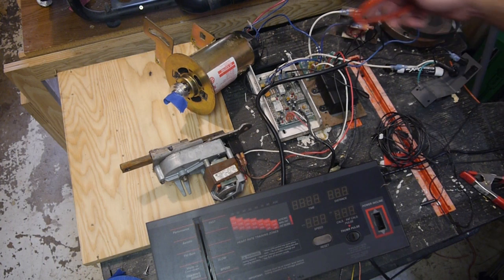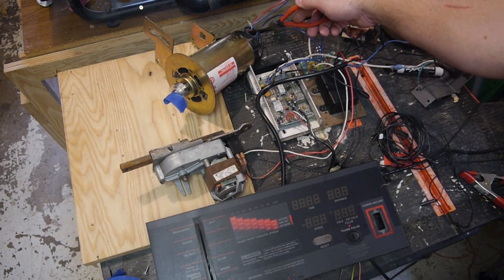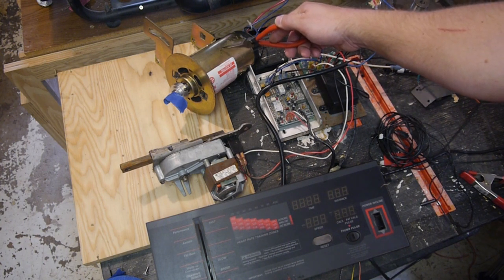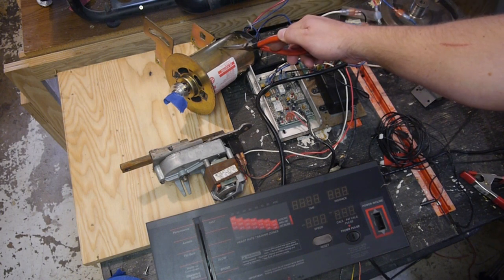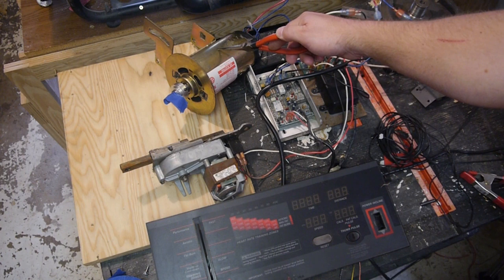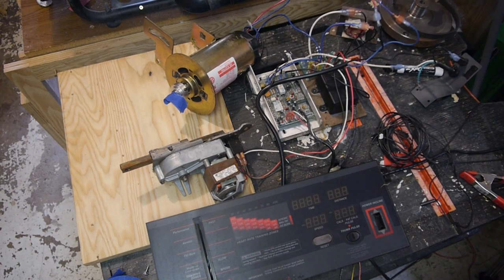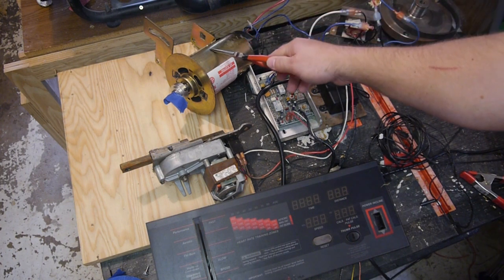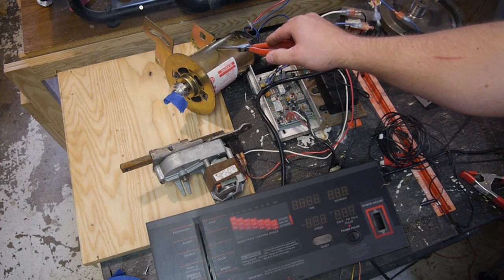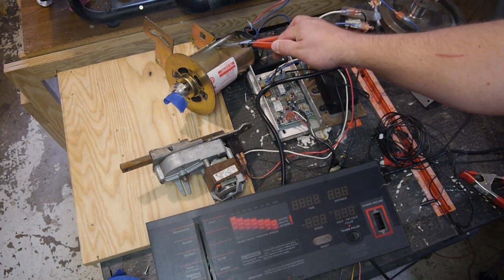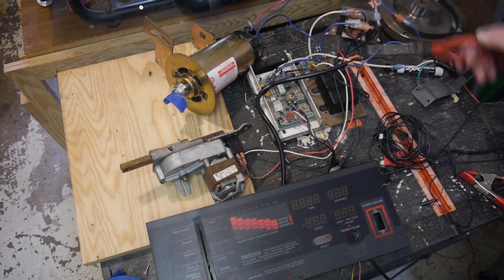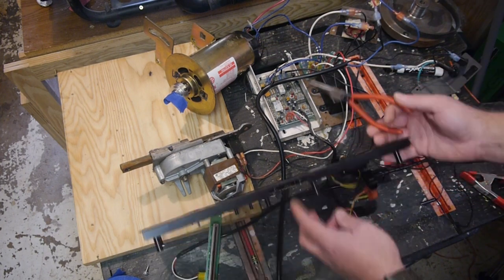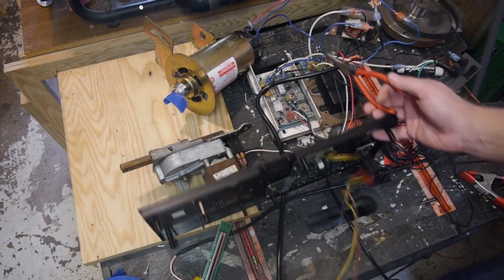Then the other line goes through a thermal switch buried deep inside the motor. We can't really get to it without cutting it open. But essentially, if this gets too hot, that switch triggers and cuts off the electricity to the entire system. I don't know if it's self-resetting or if it's like a fuse and pops and you're screwed. But that's inside there, then it comes out and goes back up into here.